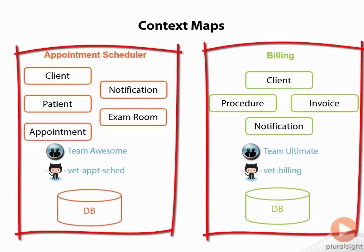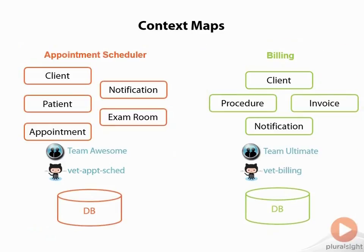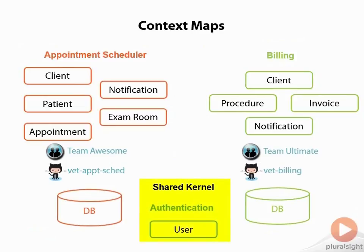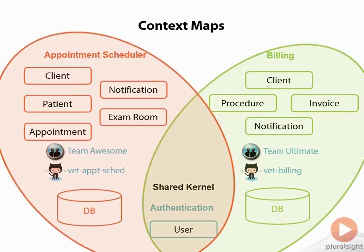Of course, you're probably wondering how the two systems will interoperate. There are a number of patterns that can be applied to enable this kind of integration. One question that frequently comes up is how to share cross-cutting concerns, like authentication. For this scenario, a common approach is to designate these shared concepts or resources as what we call a shared kernel. Team Awesome and Team Ultimate agree to share a subset of the domain model, and since they're sharing it, they also agree not to change it without coordinating with the other team first. Frequently, the shared kernel will either be a part of the customer's core domain, or some set of generic subdomains, or even both, though it can be any part of the model that both teams require.